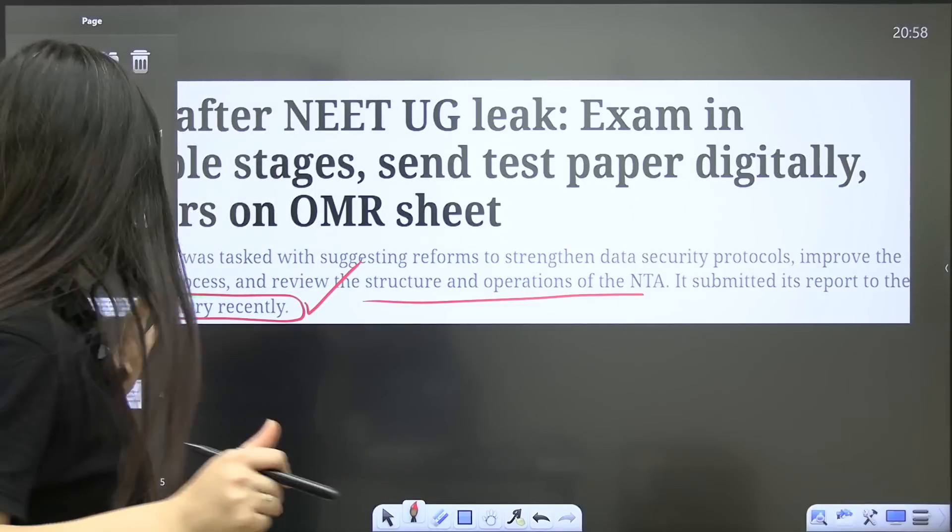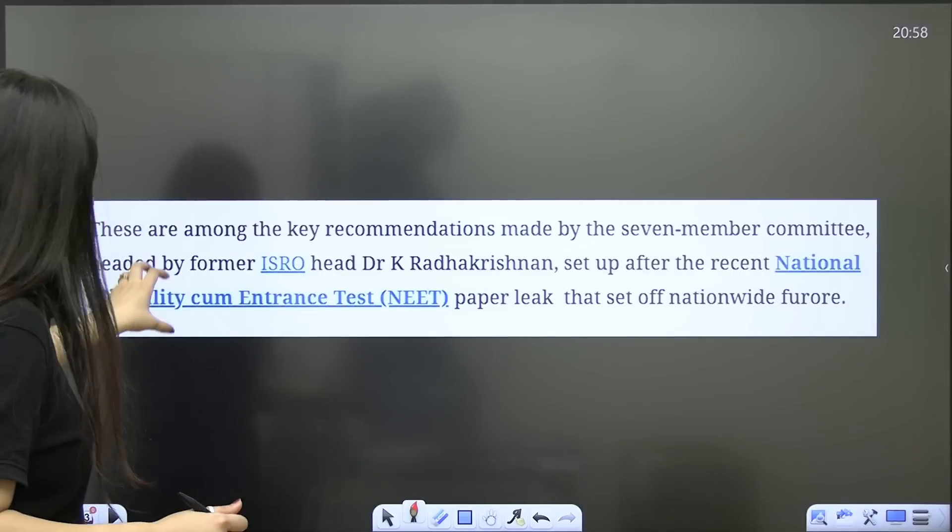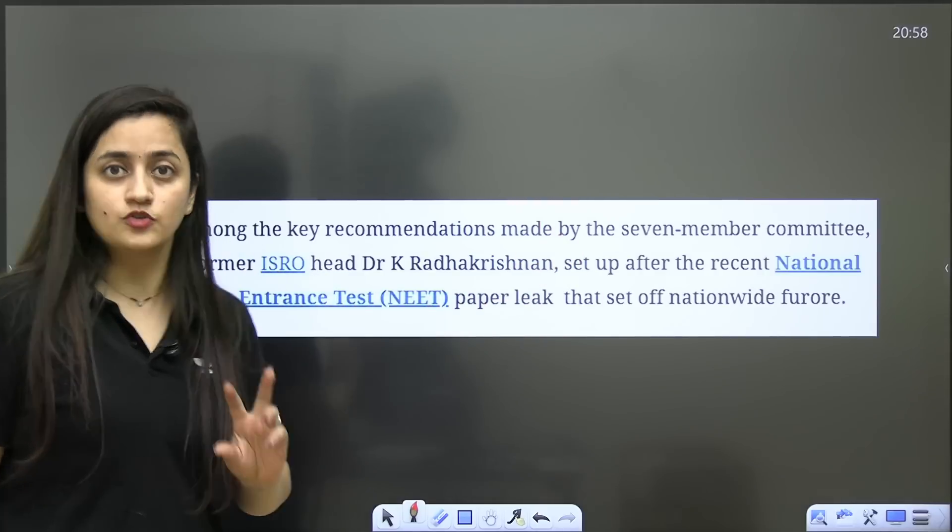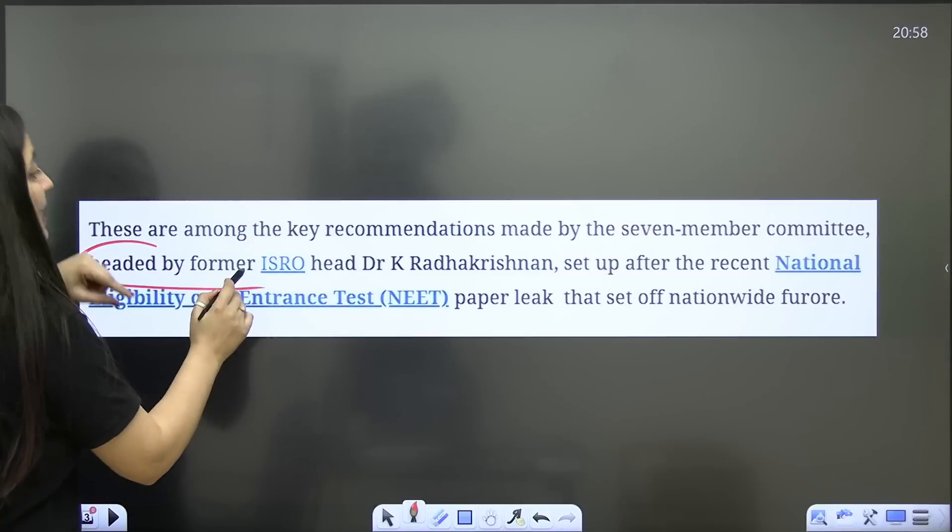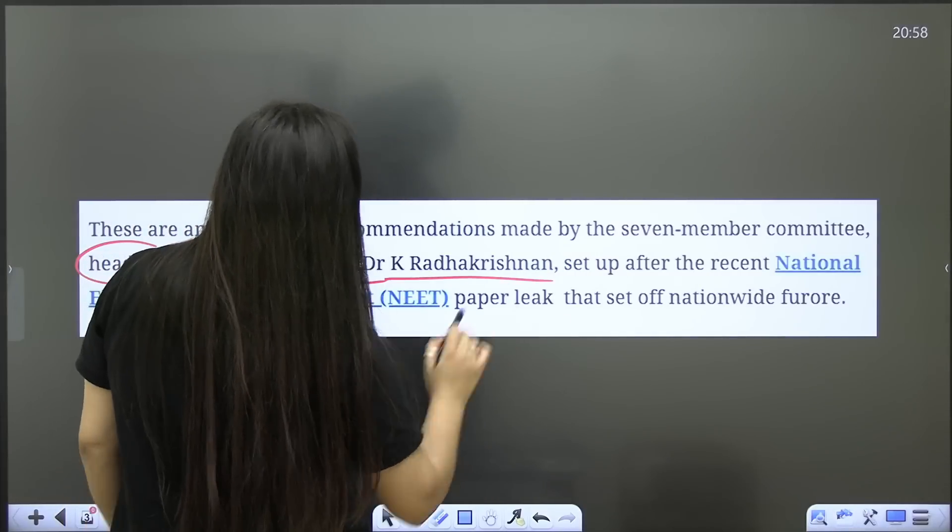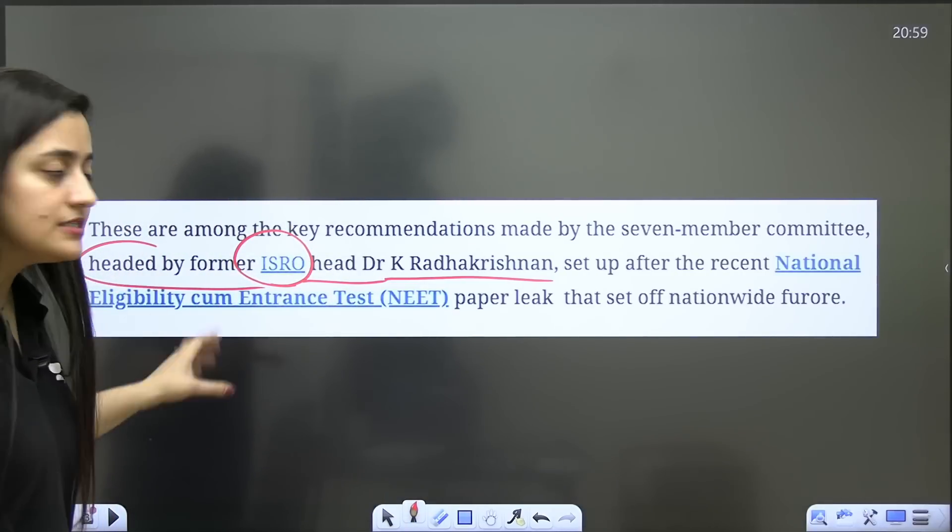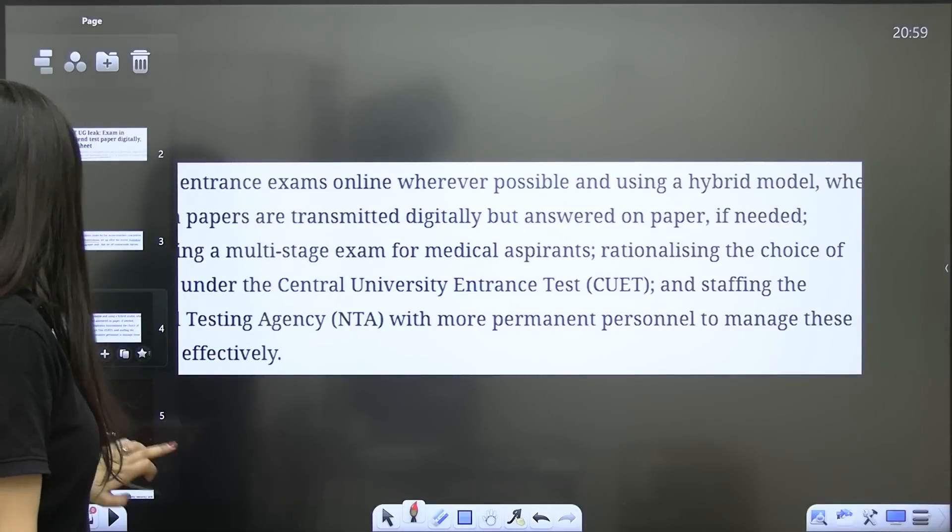When we talk about the committee, these are among the key recommendations made by the seven member committee. This committee was headed by former ISRO head Dr. K Radhakrishnan. After all that leak, they suggested the reforms. When we talk about these reforms, they are given here, so let me explain that to you.